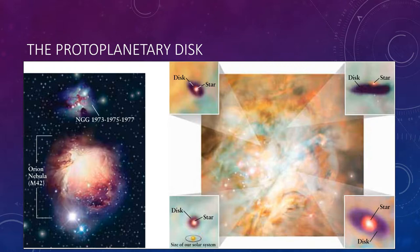The smaller bluish nebula shown above is NGC 1973, 75, and 77. The four insets are false-color close-ups of four protoplanetary disks that lie within the nebula, with a young, recently formed star at the center of each. The inset at the lower left shows the size of our own solar system for comparison.